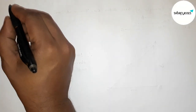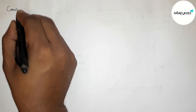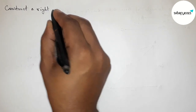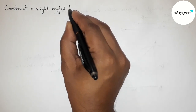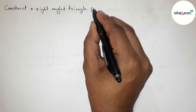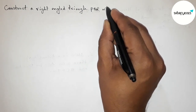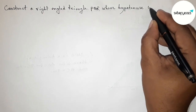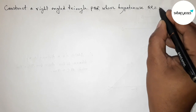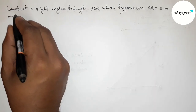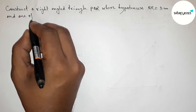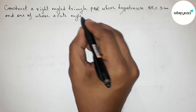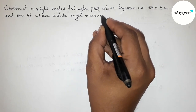Hi everyone, welcome to Essay Share Classes. Today in this video we have to construct a right-angled triangle PQR where the hypotenuse QR equals 3 centimeters and one of whose acute angles measures 30 degrees. I'm going to construct this right angle triangle in an easy way, so please watch the video till the end. Let's start.